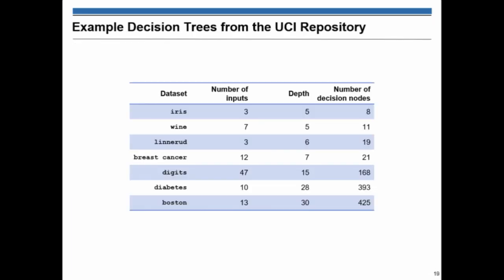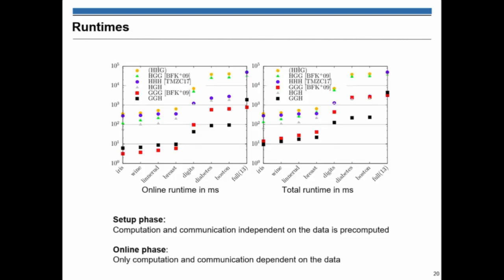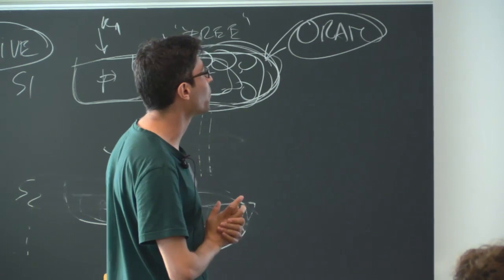The evaluation part, I will just do it quickly because I'm running slow in time. We did a lot of evaluation on real-world databases. You can see that we have databases with just a few number of inputs like the iris. And also huge databases like Boston, which includes tens of hundreds of the number of decision nodes.